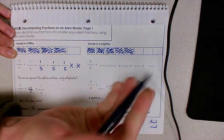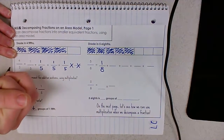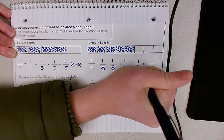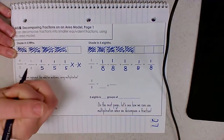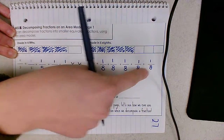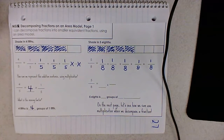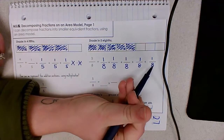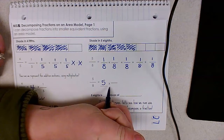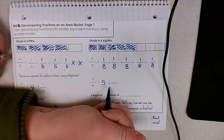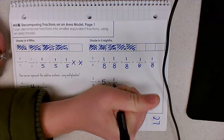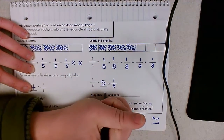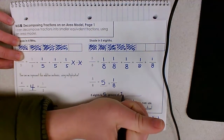Similar to last time, I'm going to represent this in a repeated addition sentence where each unit is added up to equal five-eighths. One shaded unit is the same as one of eight pieces — one-eighth plus one-eighth plus one-eighth plus one-eighth plus one-eighth. So again, how can we make this more efficient? Adding up one-eighth five times is correct, but instead we can compact this into how many groups of one-eighth we have. Five-eighths is five groups of one-eighth, because each of these units represents one-eighth. So the factor is five — five-eighths is five groups of one-eighth.